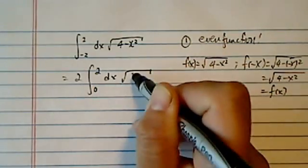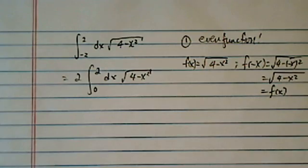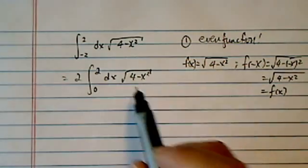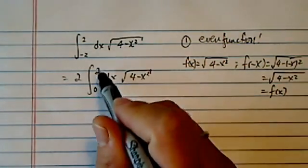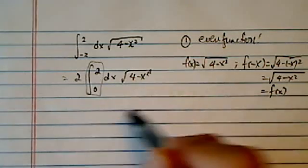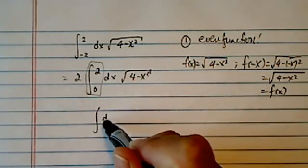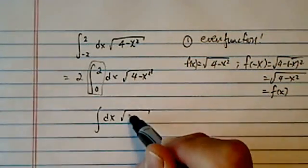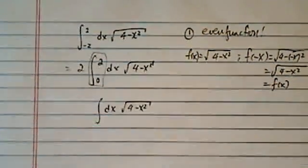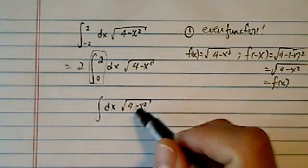Now this is important as we get higher and higher in math. We're looking for tricks. Any trick you can find, use it. Next thing I'm going to do is I'm not going to bother with its limits here. So I'm going to find dx radical root of 4 minus x squared.